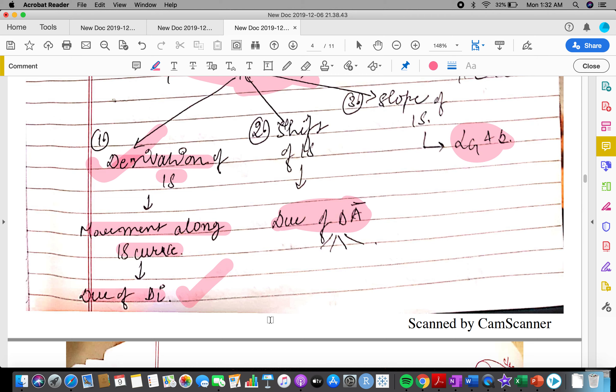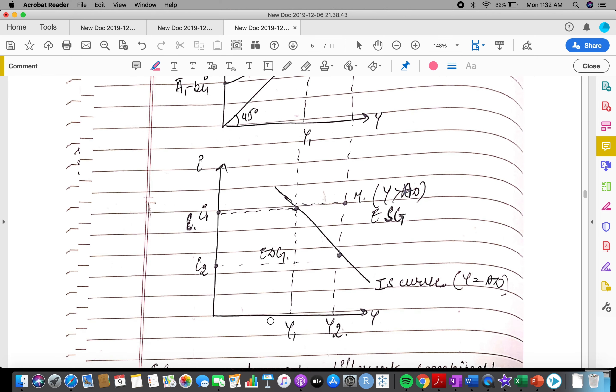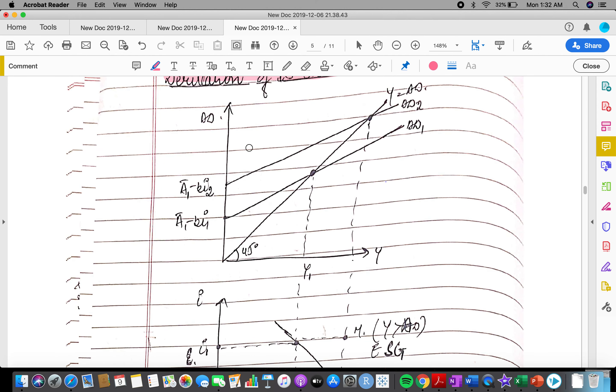In derivation of IS curve, derivation happens mainly due to change in interest rate. So if interest rate falls from I1 to I2, the AD curve would shift upward. That would happen because investment would increase.